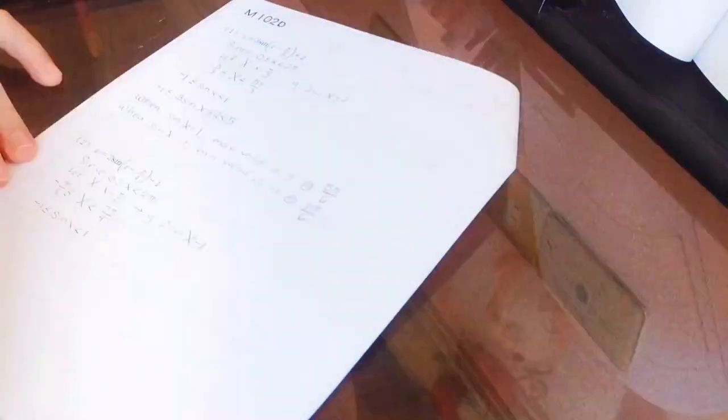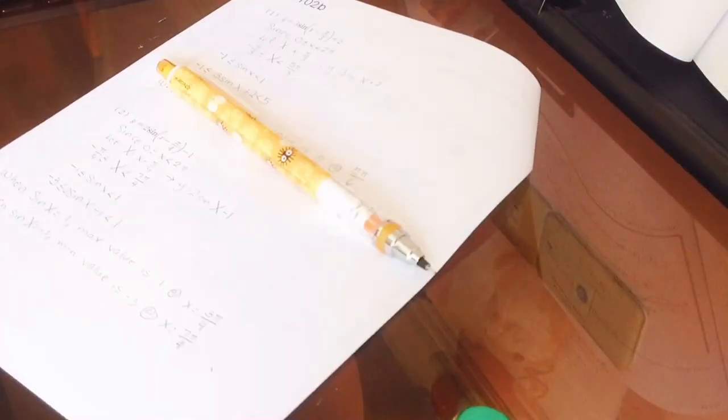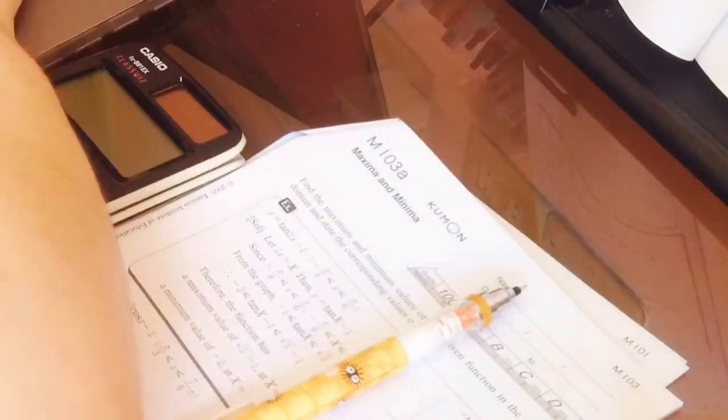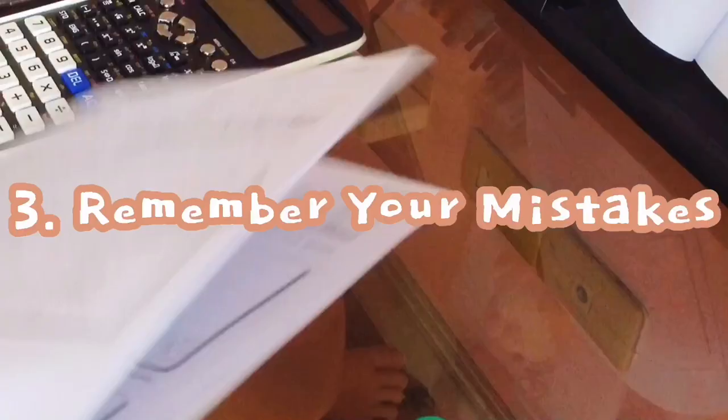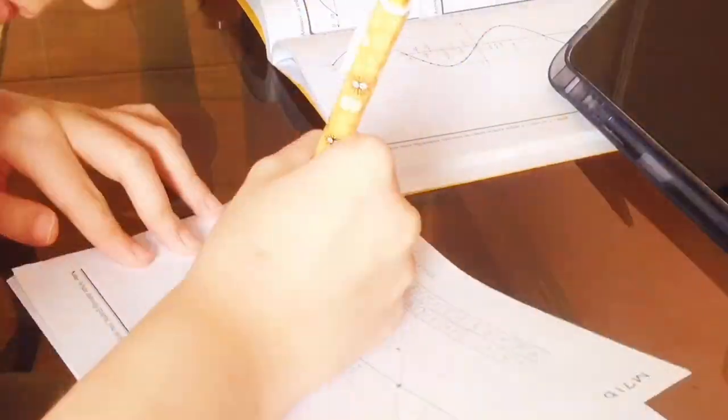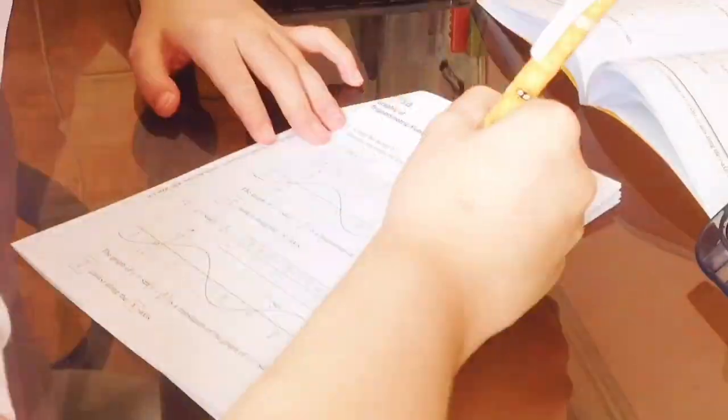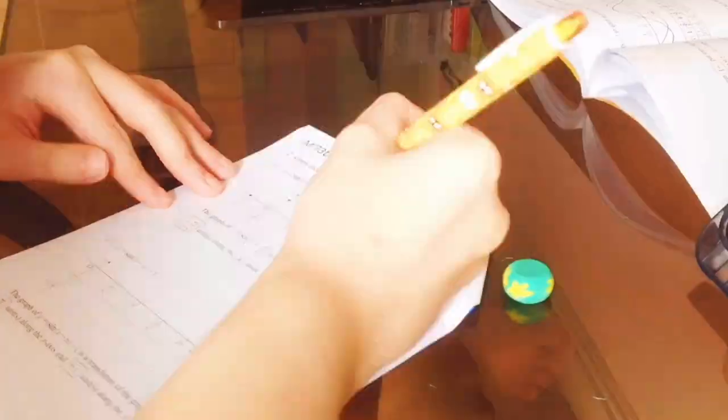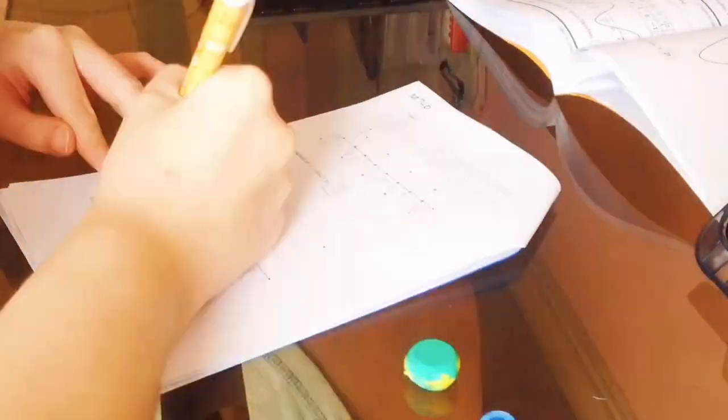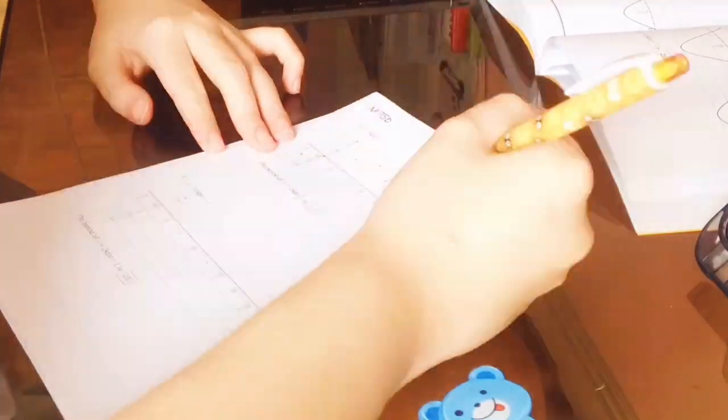Likewise, it is good to know which lessons you struggle in so that you can also give more time studying it compared to other lessons that you are familiar with. Next is to remember your mistakes. It will be nice if you can remember the mistakes that you have made during your review session so that you won't repeat those same mistakes once you take your finals.